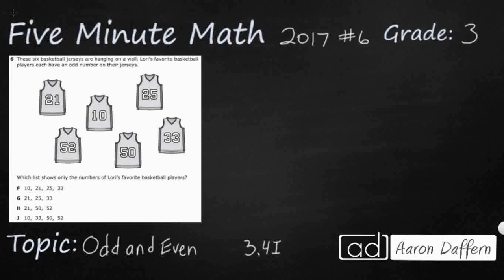So we've got six basketball jerseys hanging on a wall, and it's really, really tiny right here — it's going to be the only clue we need to figure out what to do. Lori's favorite basketball players each have an odd number. So which list shows those favorite basketball jerseys? Make sure we read this very clearly and carefully. We're looking for the list that has just the odd jerseys.